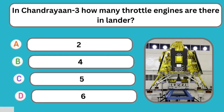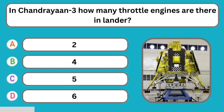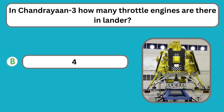Question number fourteen: In Chandrayaan 3, how many throttle engines are there in the lander? The correct answer is 4 engines in the lander.